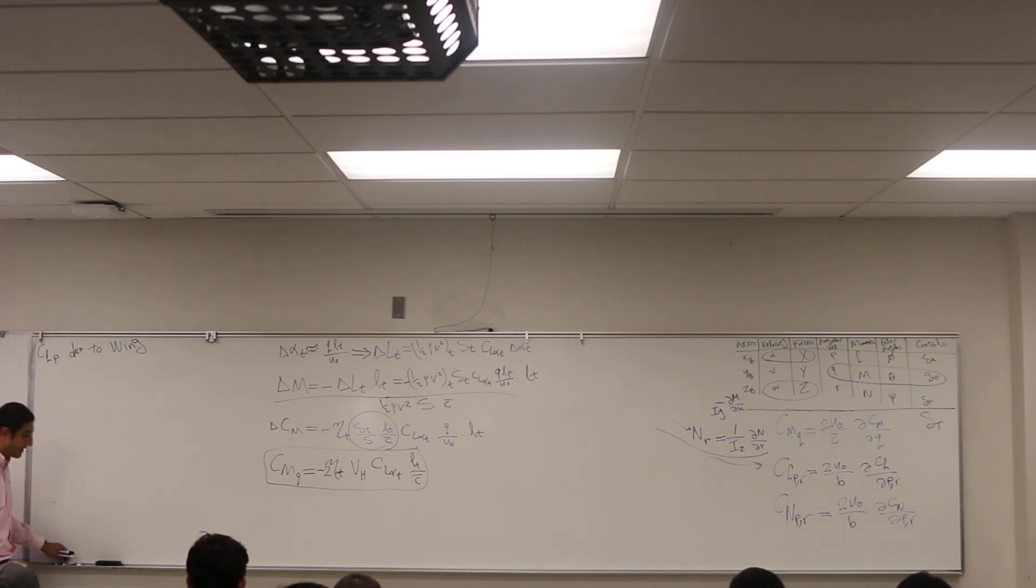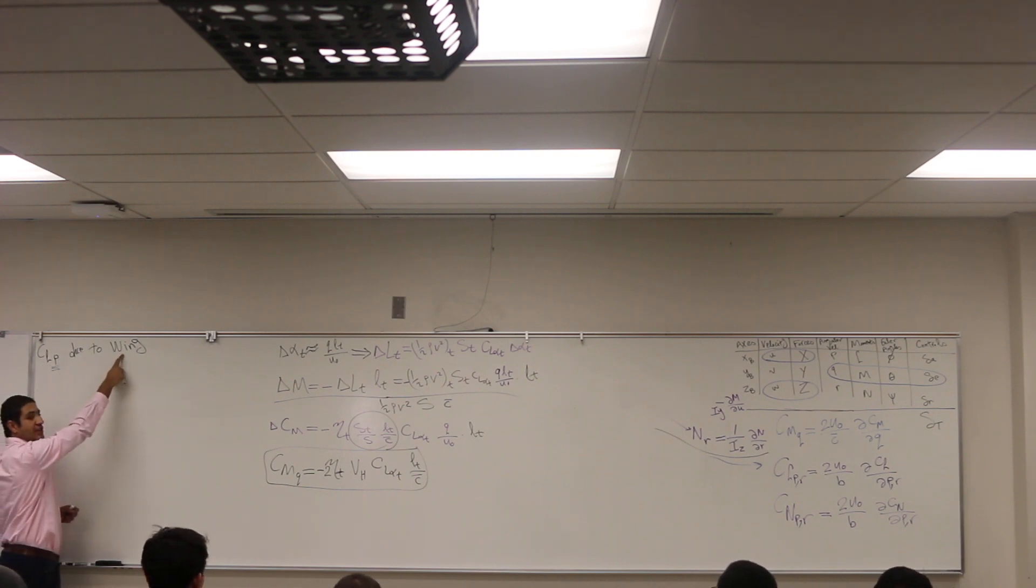So C_L_β due to wave. Again, the very systematic way: we start with the disturbance. C is nothing, C is compression, just drag this away. L_β.